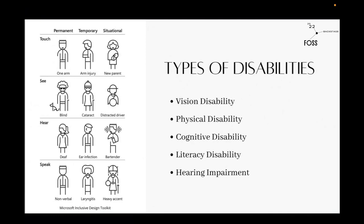We also have hearing impairment, for persons who have one hearing challenge or another. Various people have various levels of hearing loss, ranging from mild to profound cases. According to the WHO, about 466 million persons in the world experience hearing disabilities. That shows that a website that does not support translating text into audio is not favoring these people. Imagine 466 million persons not being able to access your website like other persons would.